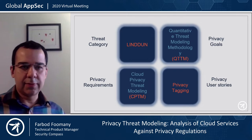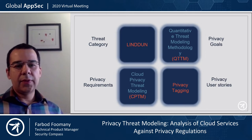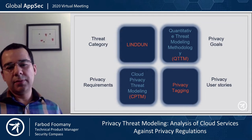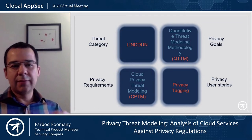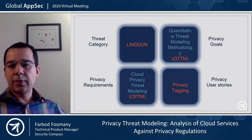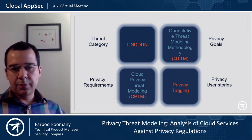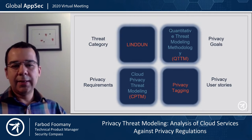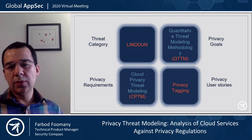The next section will be about privacy threat modeling. I have chosen four different privacy threat modeling techniques from a myriad of different methods that exist in the literature. Note that these slides don't render correctly because of the difference between the systems. I've chosen LINDDUN, QTTM, CPTM, and a privacy tagging technique, and we have chosen them selectively for a reason. LINDDUN gets its threats from a number of predefined threat categories. CPTM is mainly designed for cloud and gets its requirements from privacy requirements and from compliance.